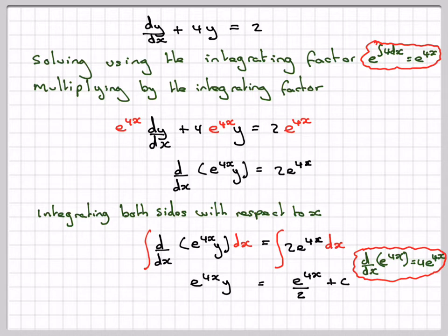Dividing by e to the 4x, we're going to get y is equal to ce to the minus 4x. This will become c over 4x, which becomes e to the minus 4x, and the e to the 4x will cancel and we'll just get left with half.